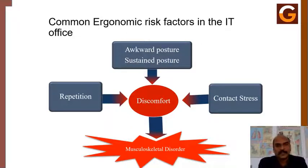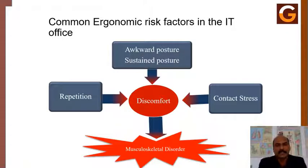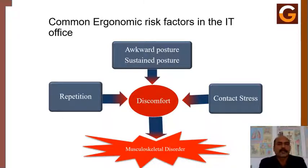People working at computer systems develop such injuries mainly due to the acquired posture they adopt when doing the job, particularly sustained posture in sitting, along with abnormalities. They also perform repeated tasks in desk jobs using the mouse and keyboards, and there is a lot of contact stress to the wrist, forearm and lower back, leading to injuries in the neck, shoulders, elbow and upper and lower back.